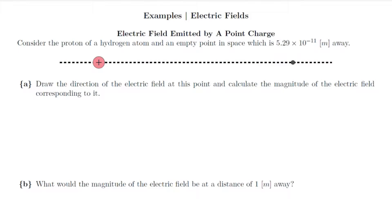Electric field by a point charge. Consider the proton of a hydrogen atom and an empty point in space which is 5.29 times 10 to the minus 11th meters away. We're going to draw the direction of the electric field at that point of interest and we're going to calculate the magnitude of the electric field corresponding to that.